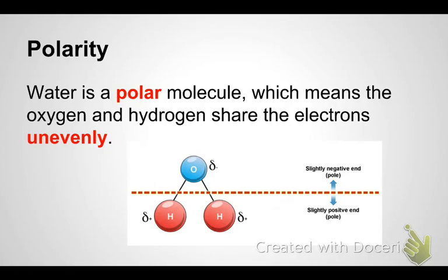So polar again just means that the oxygen and hydrogen are not sharing the electrons evenly. The oxygen is hogging more of the electrons making it more negative and it will behave negative and the hydrogens get less electrons which make them more positive and they will behave positive.